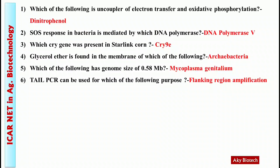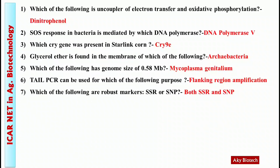Question 6: Tail PCR can be used for which of the following? Answer: Flanking region amplification. Question 7: Which of the following are robust markers — SSR or SNP? Answer: Both SSR and SNP are robust markers.